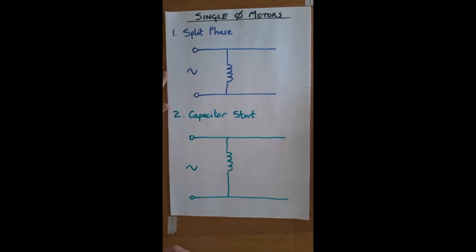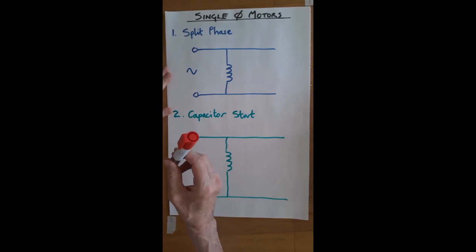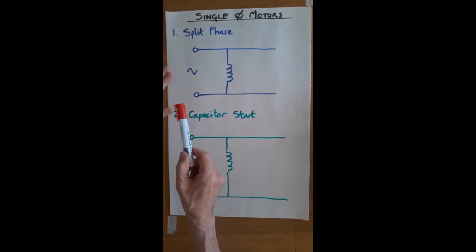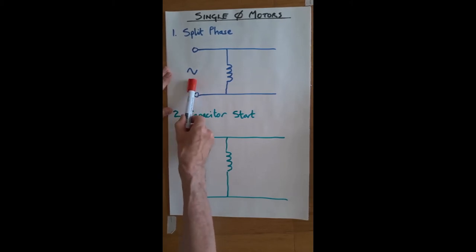Let's have a quick look at single-phase motors. With a three-phase motor, the motor starts because there is a rotating magnetic field. On a single-phase supply, we can't get the rotating magnetic field, so we have to use a series of electrical techniques and tricks to make the motor start.